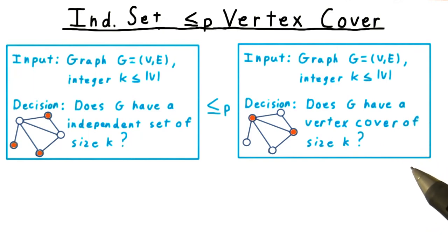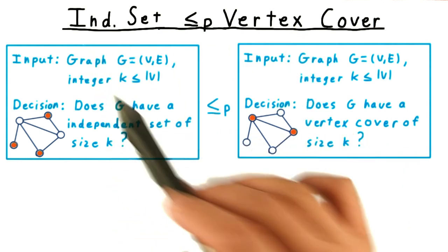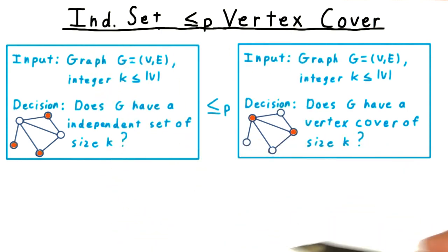Having defined the independent set and vertex cover problems, we will now show that vertex cover is as hard as independent set. In general, finding a reduction can be very difficult.